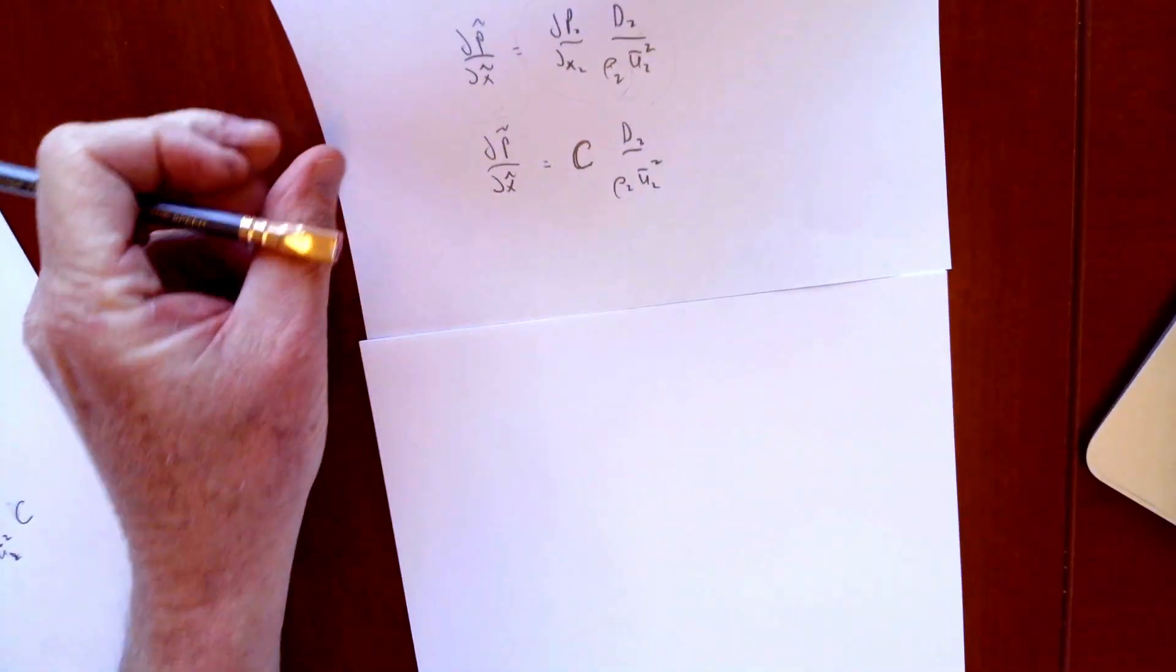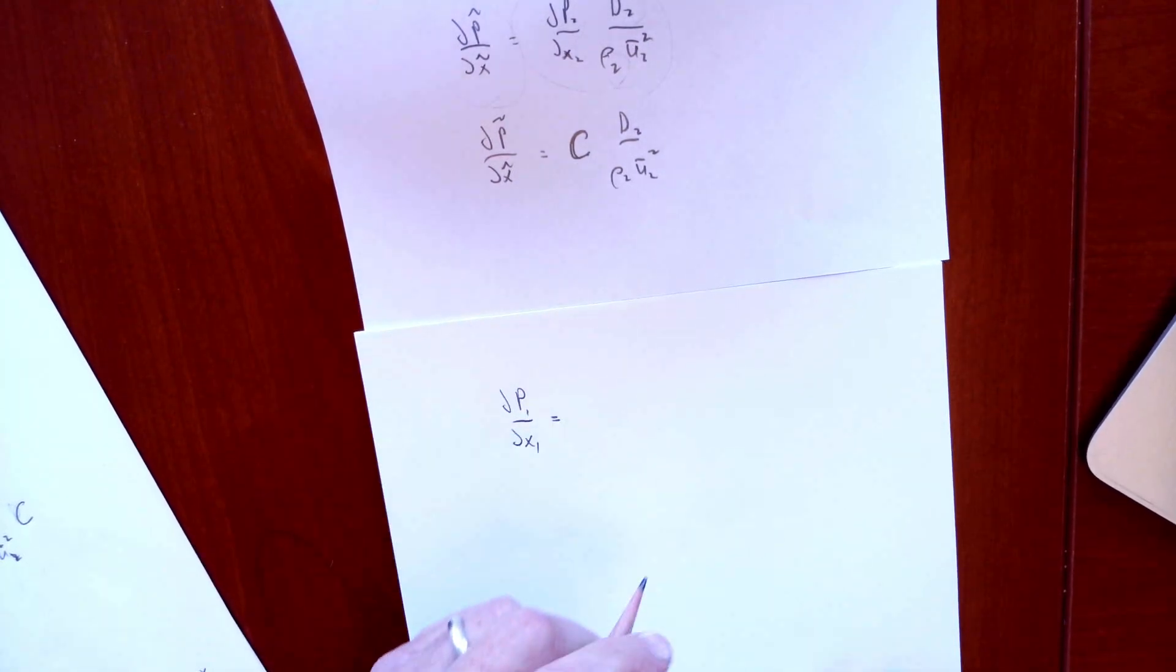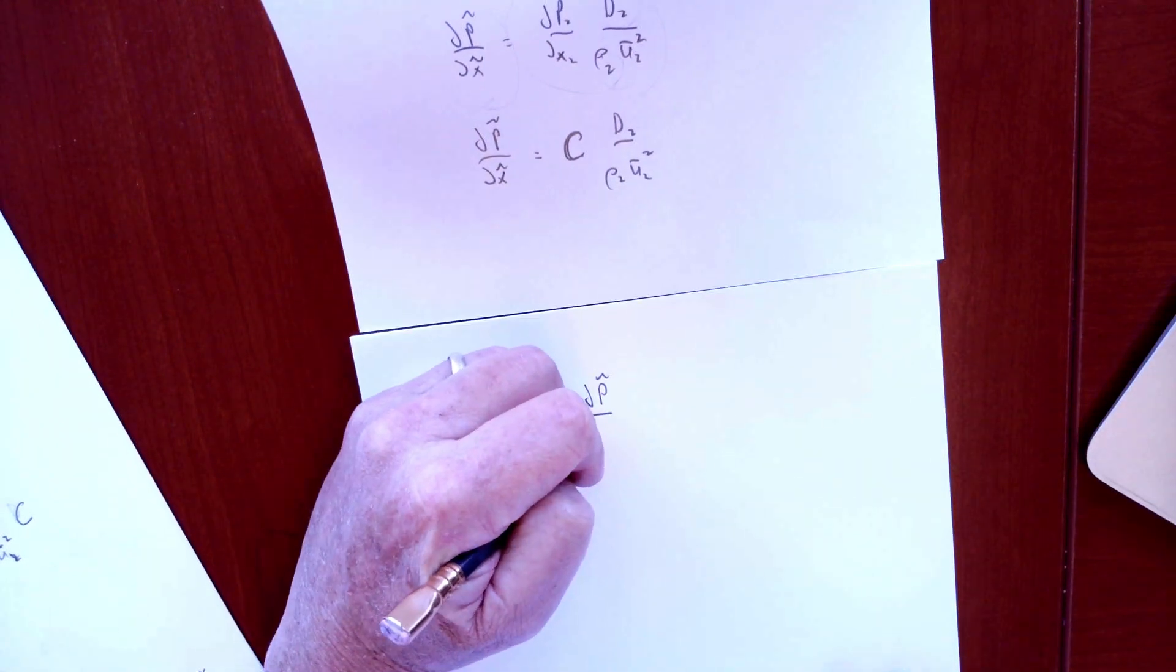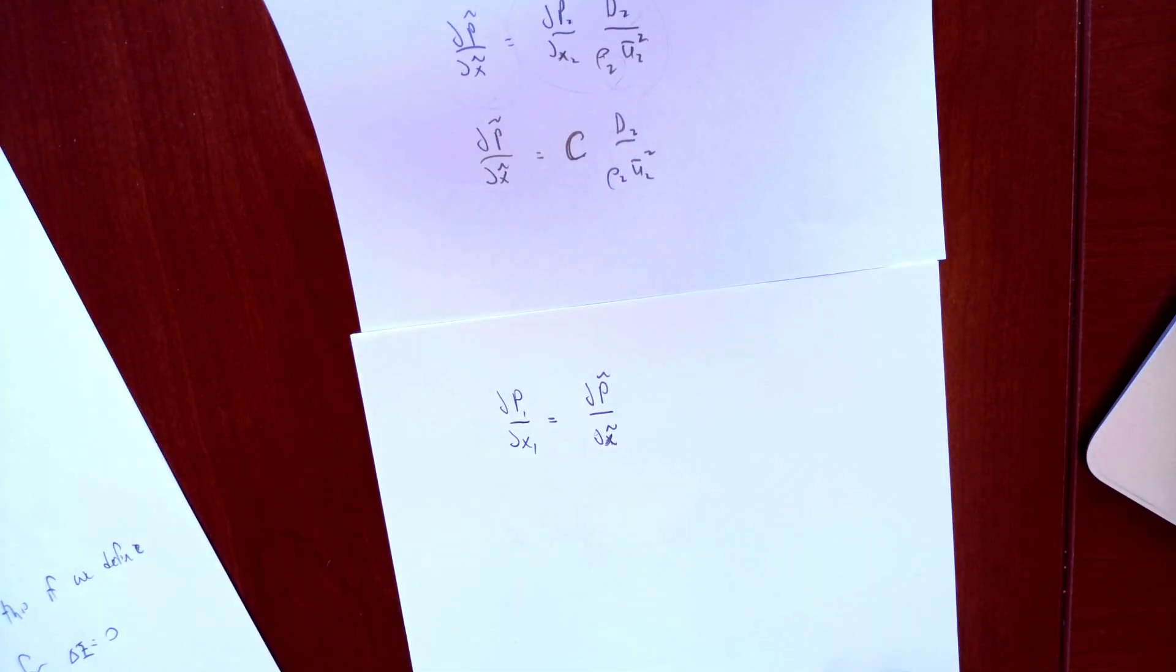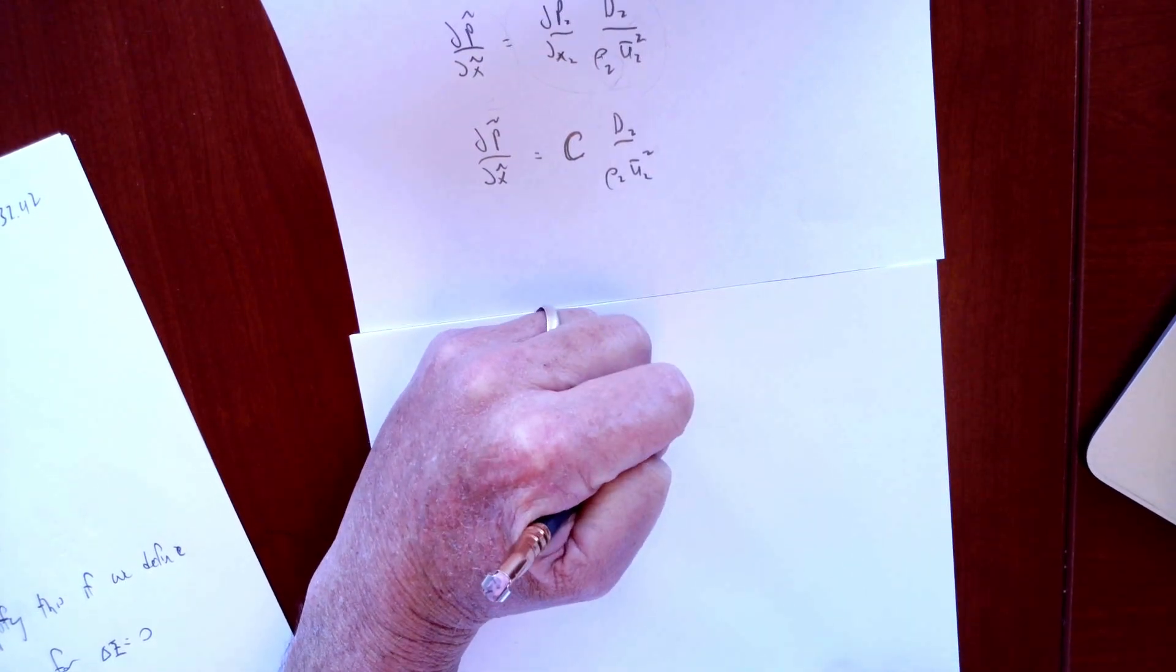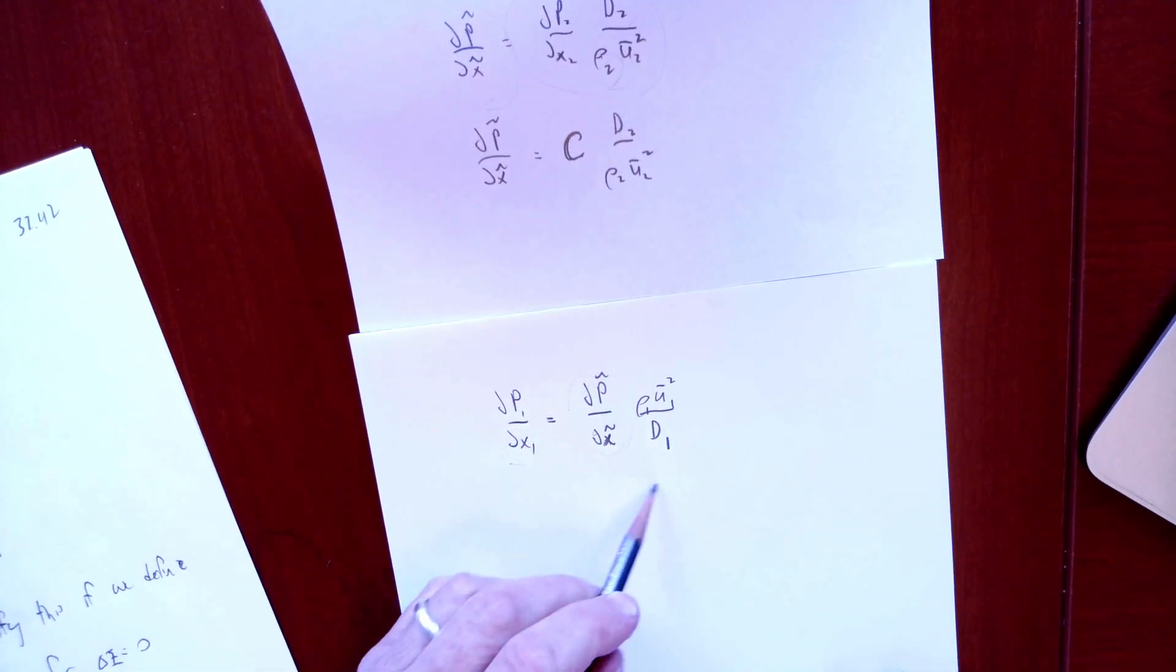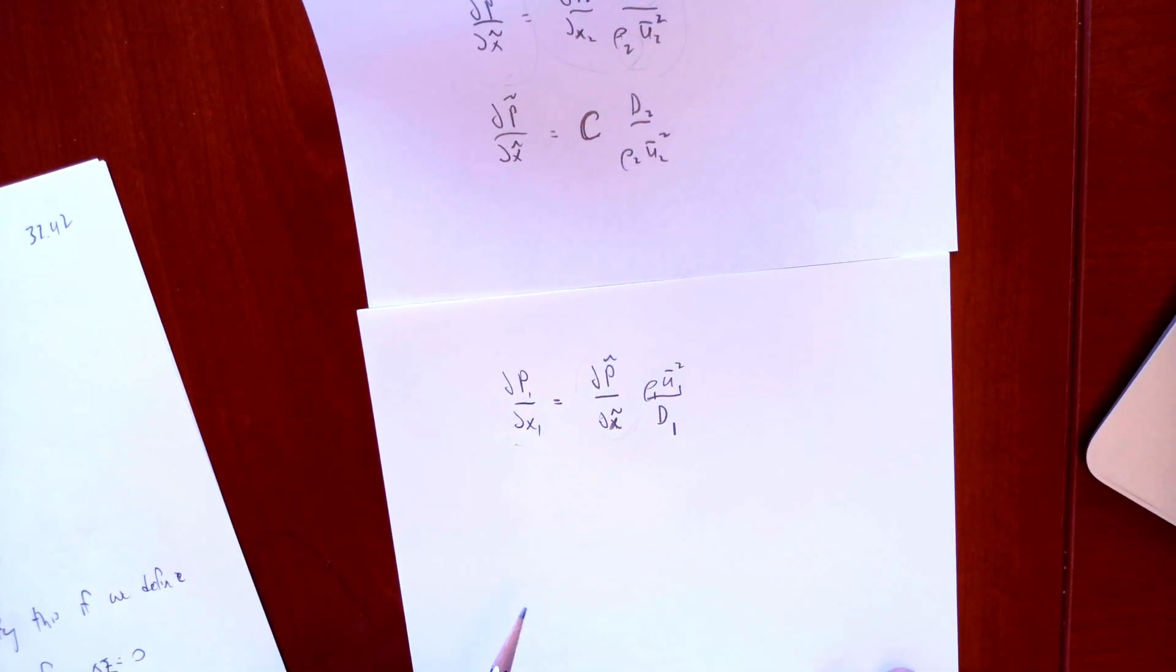Now we're going to relate that to the DP1/DX, the pressure gradient we expect to see in pipe one. That's also going to be related to the dimensionless one, and it's going to be related in such a way that we have ρU squared over D1. So we have DP1/DX1 on the left, the dimensionless one here, and then this is ρ1U1 and D1, because this is all in the one coordinate frame now.